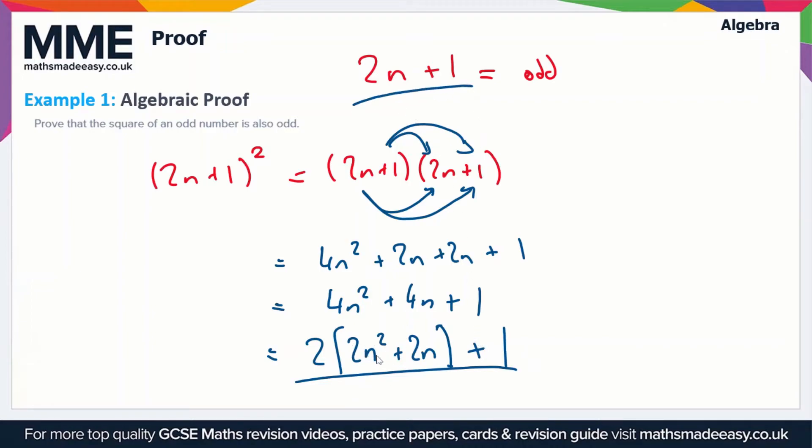Effectively this is in the same form as 2n + 1, where this 2n² + 2n is going to be just a generic integer. So we've got 2 times a generic integer plus 1, which equals odd.